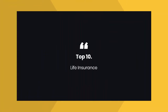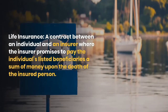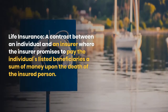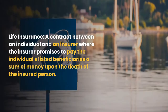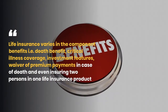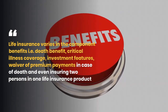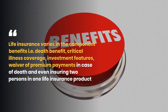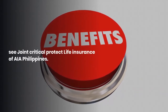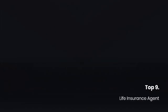Number 10: Life insurance — a contract between an individual and an insurer where the insurer promises to pay the individual's listed beneficiaries a sum of money upon the death of the insured person. Life insurance varies in component benefits, including death benefit, critical illness coverage, investment features, waiver of premium payments in case of death, and even insuring two persons in one life insurance product — see Joint Critical Protect Life Insurance of AIA Philippines.